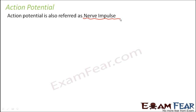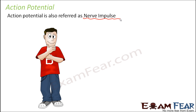Initially, when the neuron is not excited, it has the resting membrane potential. Let us suppose you are standing and nobody is bothering you — right now the neuron is in a resting state and the potential is the resting membrane potential. Resting state means the neuron is in the polarized state.